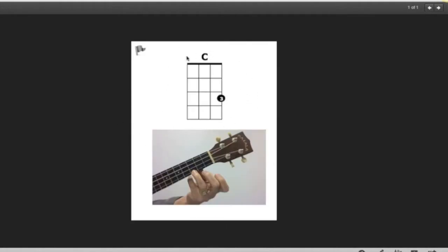And so when you look at a chord chart like this, like the one we just looked at, and you put your ukulele in playing position, this is your third finger, third finger on the first string, first string, third fret.